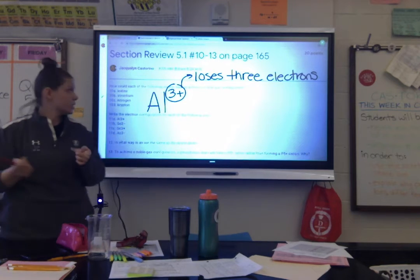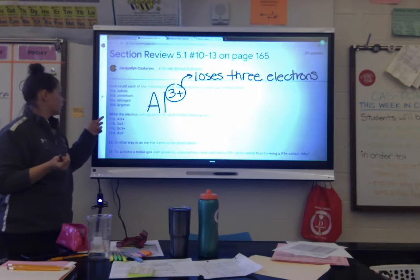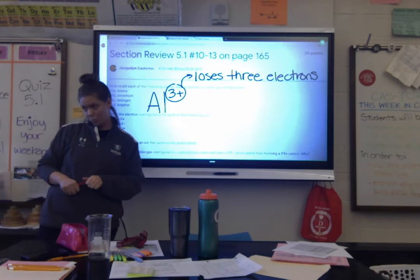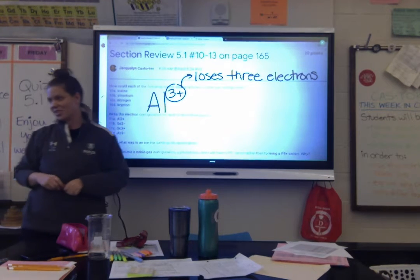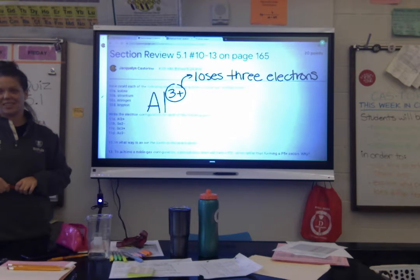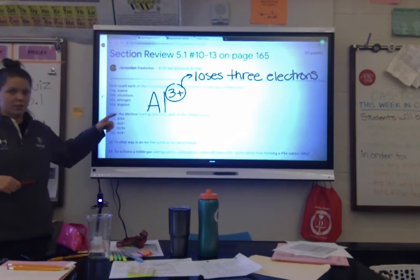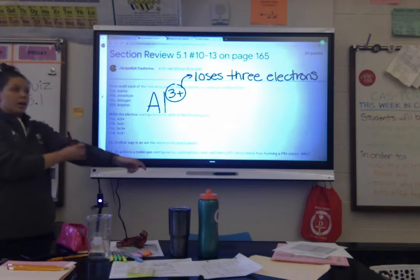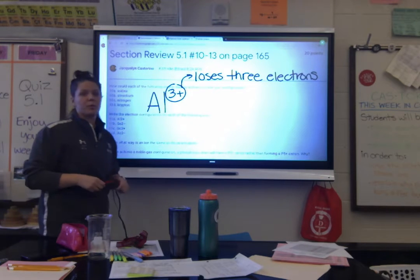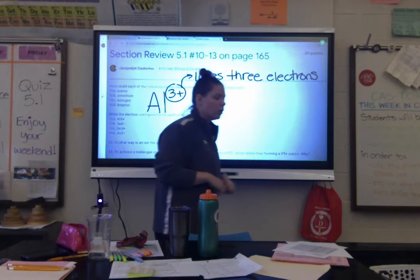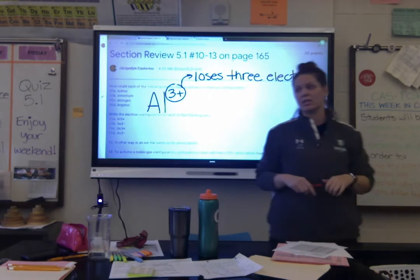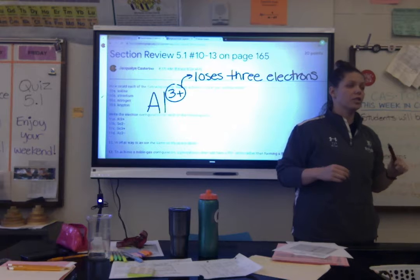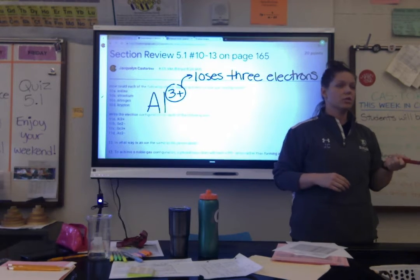But that's not the answer — the question is asking for the electron configuration. So, where's aluminum on the periodic table? Its atomic number is 13. So we have 13 protons. In a neutral atom, protons and electrons are equal, so we start with 13 electrons.